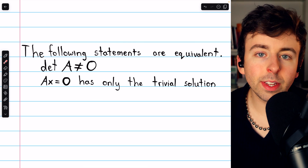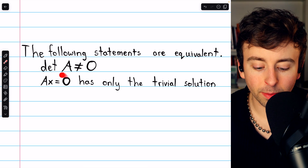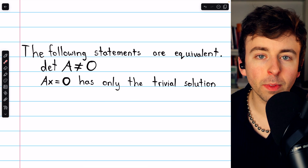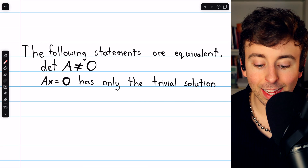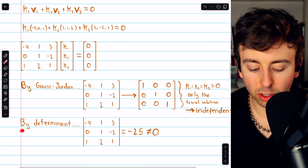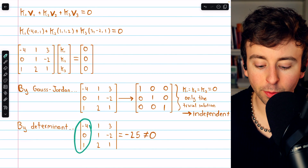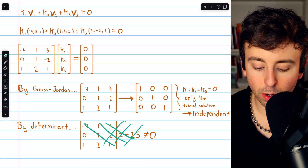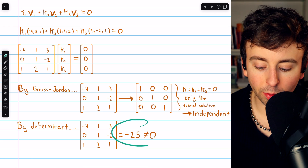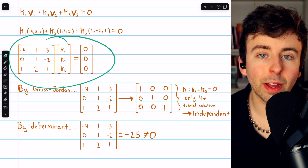An easier method uses the previously proven equivalence: if the determinant of the coefficient matrix is non-zero, then the homogeneous system Ax = 0 has only the trivial solution. So we just take the determinant of our coefficient matrix, and if it's non-zero, we know the only solution is the trivial one. The determinant here, which you can compute via cofactor expansion along the first column or the diagonal trick for 3×3 matrices, equals −25. Since it's non-zero, the only solution is the trivial one — hence the vectors are linearly independent.